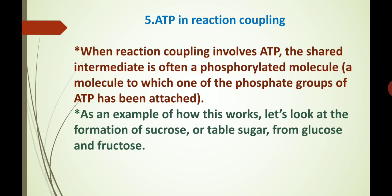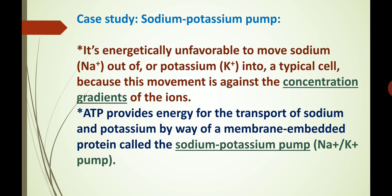A phosphorylated molecule is one to which one of the phosphate groups of ATP has been attached. As an example of how this works, let us look at the formation of sucrose, or table sugar, from glucose and fructose. We can take a case study to understand this — the sodium-potassium pump. It is energetically unfavorable to move sodium ions out of, or potassium ions into, a typical cell, because this movement is against the concentration gradients of the ions. ATP provides energy for the transport of sodium and potassium by way of a membrane-embedded protein called the sodium-potassium pump, that is the Na-K pump.